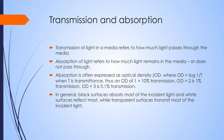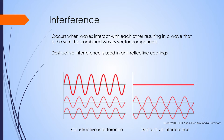Transmission of light in a medium refers to how much light passes through the medium. Absorption of light refers to how much light doesn't pass through — how much light remains in the medium — and absorption is often expressed as an optical density. In general, black surfaces absorb most of the incident light and white surfaces reflect most of the light, while transparent surfaces transmit most of the light. Interference is another important property of light. Two waves perfectly in phase experiencing constructive interference will double the amplitude of the light. Two waves out of phase experiencing destructive interference can actually result in the elimination of the wave. The principle of destructive interference is used in anti-reflective coatings.